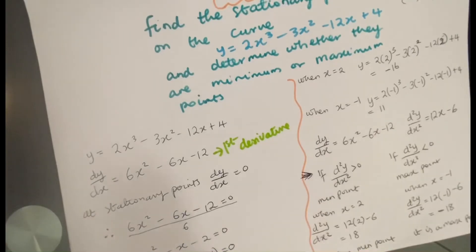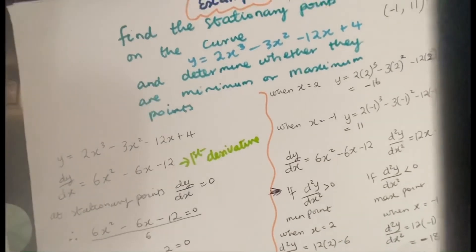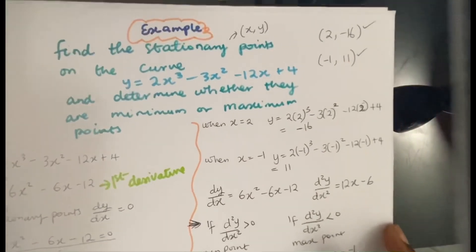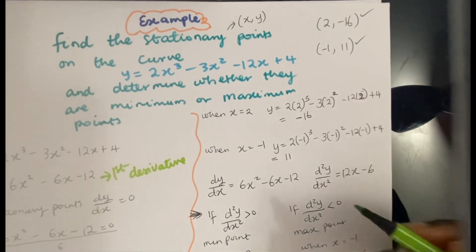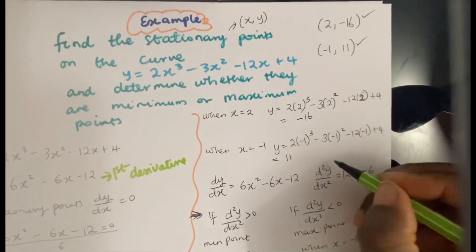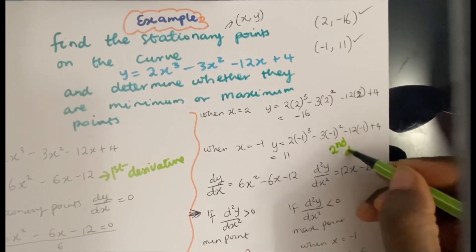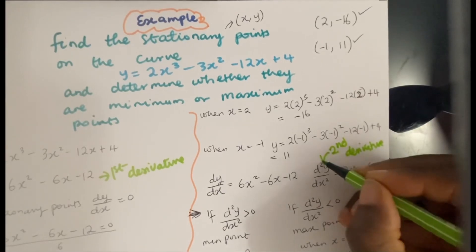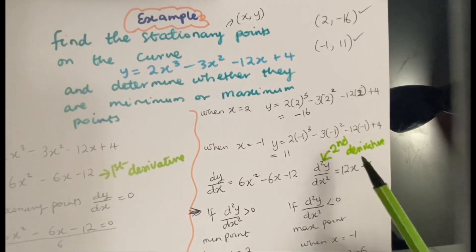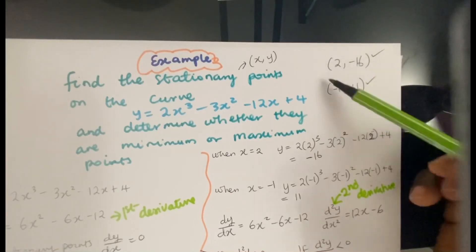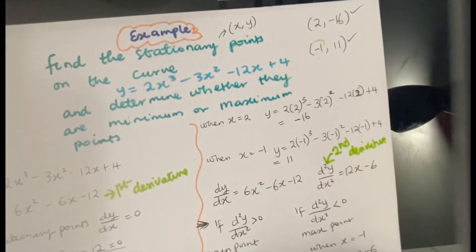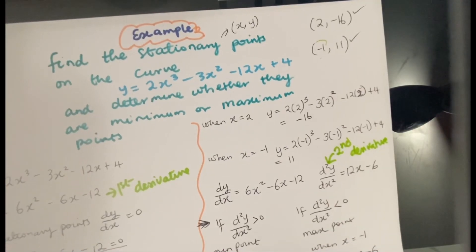So that's how we solve this type of problem. To summarize: differentiate to find dy/dx, set it equal to zero to find the x-coordinates of stationary points, then find the corresponding y-coordinates. To determine whether each point is a minimum or maximum, find the second derivative d²y/dx², substitute each x value, and check whether the result is greater than or less than zero.